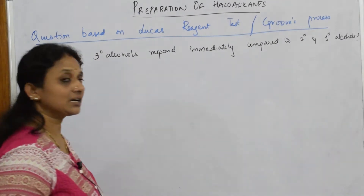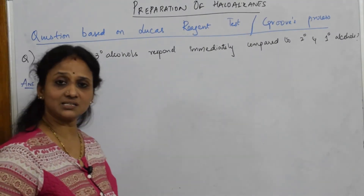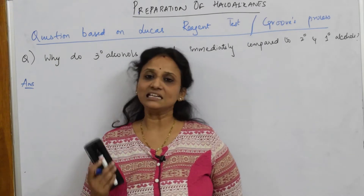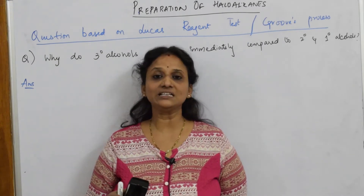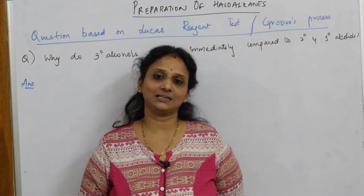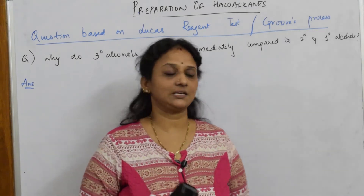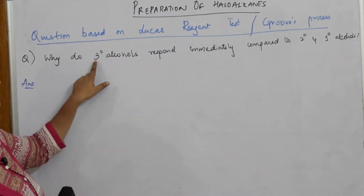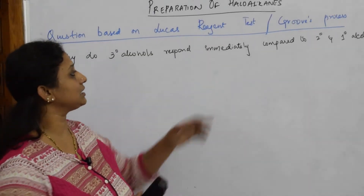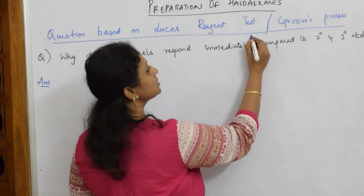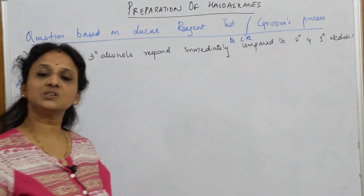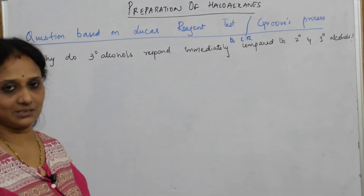In Lucas test, the most preferred product comes from tertiary alcohol. The least preferred — or the compound not formed at room temperature — is the primary alkyl halide. Let us see why tertiary alcohols respond immediately to Lucas reagent compared to secondary and primary alcohols.